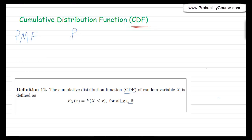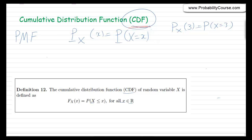We define the probability mass function of a random variable x: Px of x is equal to the probability that the random variable x is equal to x. For example, Px of 3 is the probability that x equals 3. Another way to describe the distribution of a random variable is to use the CDF, and the CDF has some advantages over the PMF. In particular, the CDF can be defined for any kind of random variable — discrete, continuous, and mixed random variables — whereas the probability mass function can only be defined for discrete random variables.